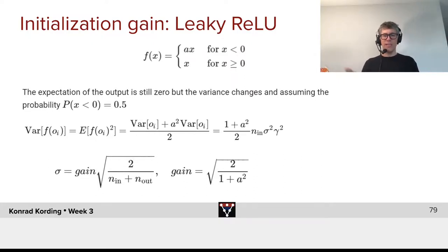Keep in mind that the mean is zero here. In that case, we have that this is the variance of the positive activity plus a² times the variance of the negative ones divided by 2.